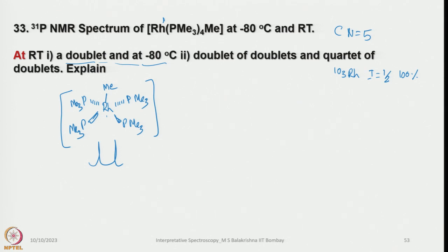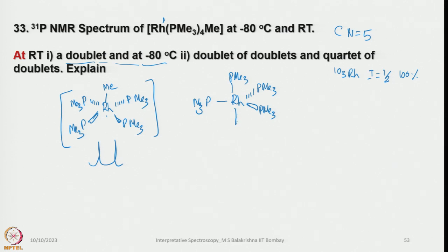Now the doublet of doublets at minus 80°C means the compound is not retaining the square pyramidal geometry — it is converting to trigonal bipyramidal geometry. When we go to trigonal bipyramidal there are several options. One isomeric form has all 3 trimethylphosphines in the equatorial plane and 1 in the axial position.